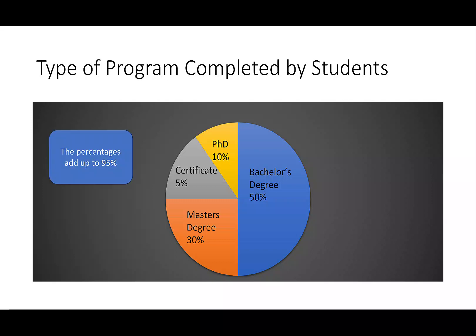The first problem we should notice is that the percentages add up to 95% and not 100. Another problem in the graph is the 10% slice is smaller than the 5% slice. This may lead people to think there are more certificate students than PhD students.